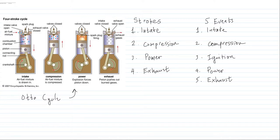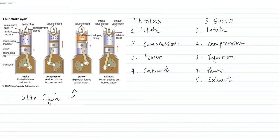With the next movement of the piston, the piston goes down and produces power. This is the power stroke — the explosion of forces causes the piston to go down. The ignition event provides the power for the piston to move down. This is where power is delivered to the wheels of a car.